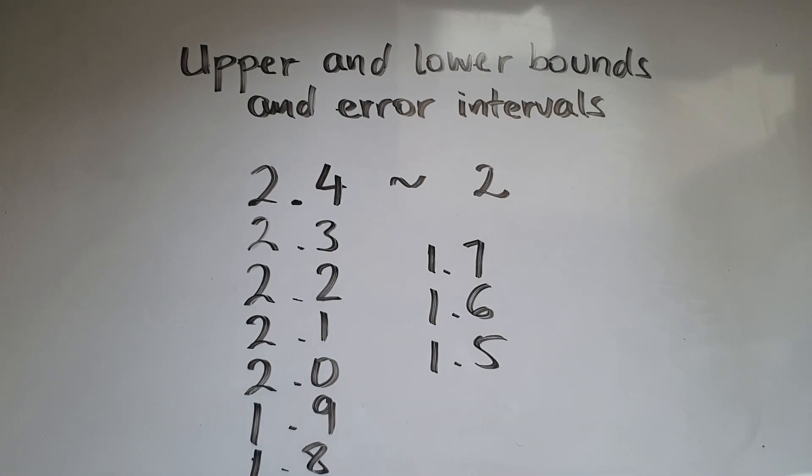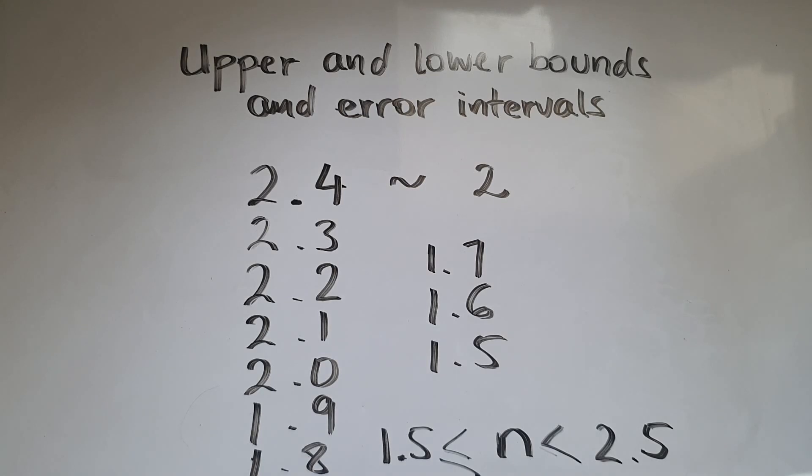Because if I got to 1.4 then that would be rounded to 1. So these values represent the error interval, and what we're going to do is use an inequality to describe the range of values. If we think of the number as n, because it can be a range of values, it's going to be greater than or equal to 1.5. So it includes 1.5 and values higher than that, but less than 2.5.